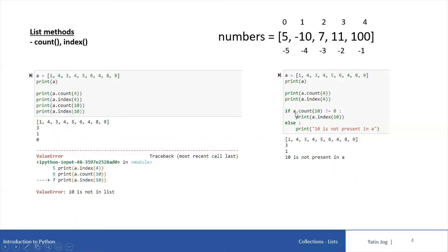To handle this error, you can use an if condition: first check with count — if a.count(10) is not equal to zero, that means 10 is present, and only then invoke a.index(10) to get the index. Otherwise, print '10 is not present in my list.' So instead of an error, we now get the output '10 is not present in a.' A similar thing can also be done using a try block, which will be explained in a different video.